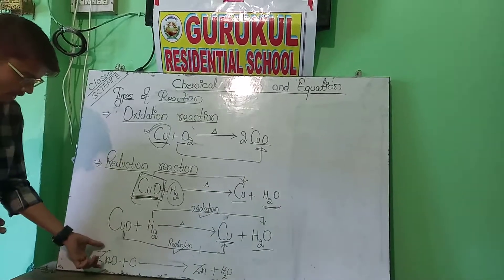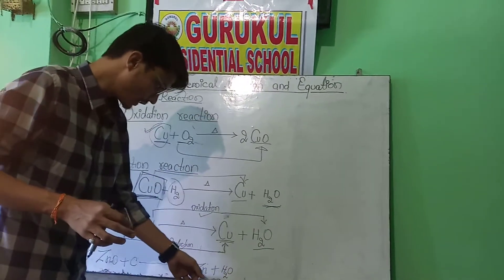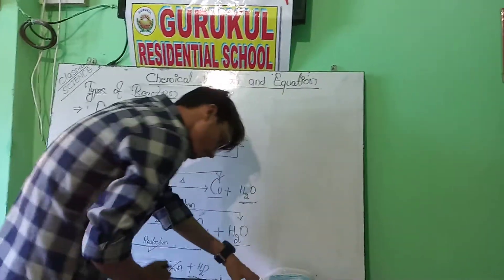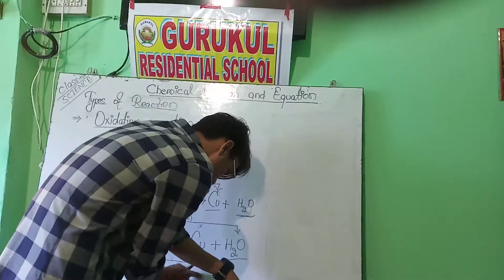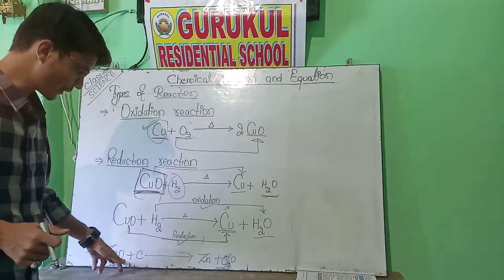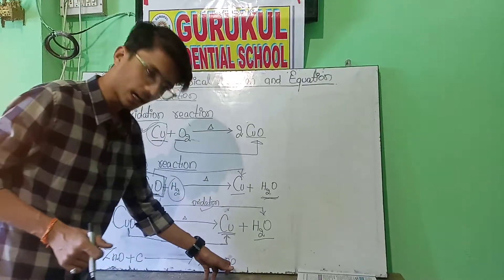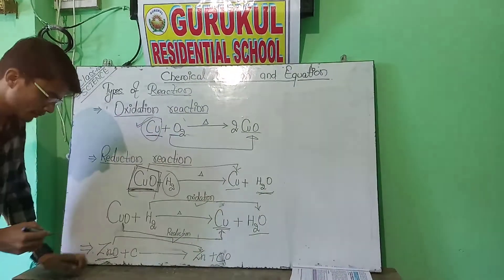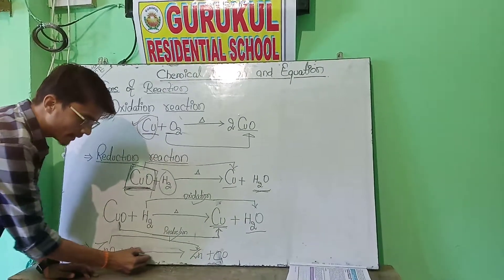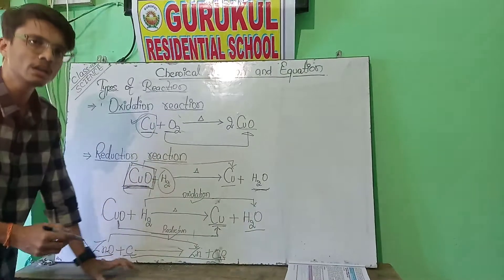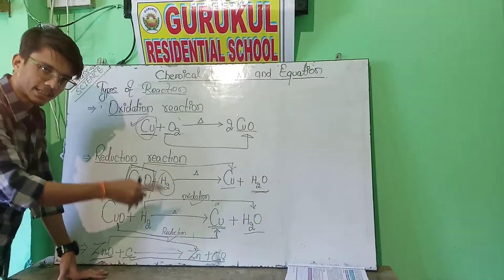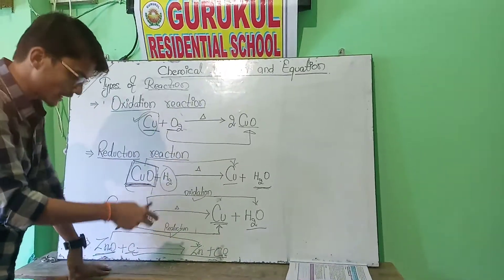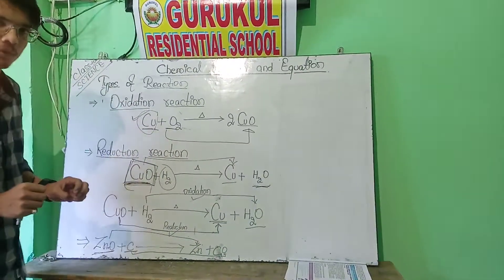The next example: when zinc oxide reacts with carbon, it forms Zn and CO — zinc plus carbon monoxide. In this reaction, from ZnO, oxygen is removing, which is an example of reduction reaction. And carbon is combining with oxygen, so this is an example of oxidation reaction. When these two are performing together, this is also an example of a redox reaction.